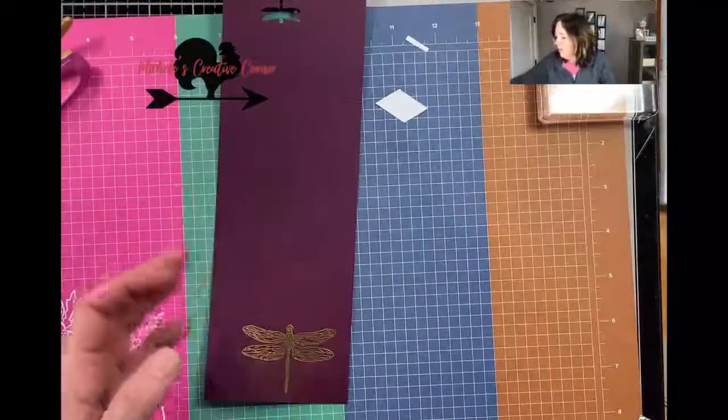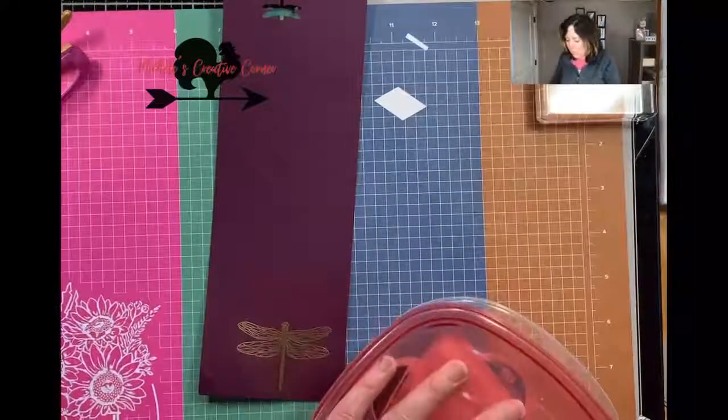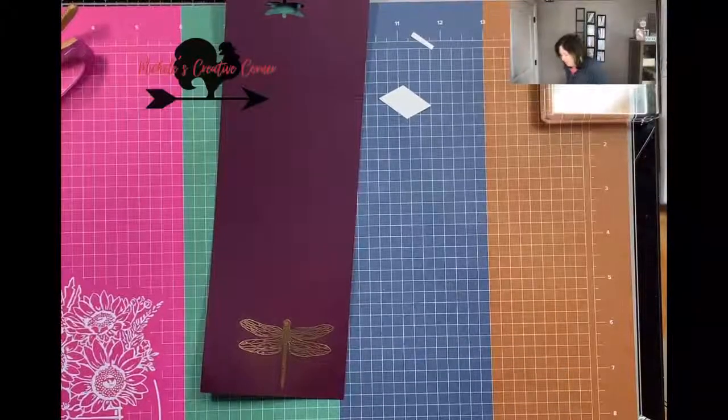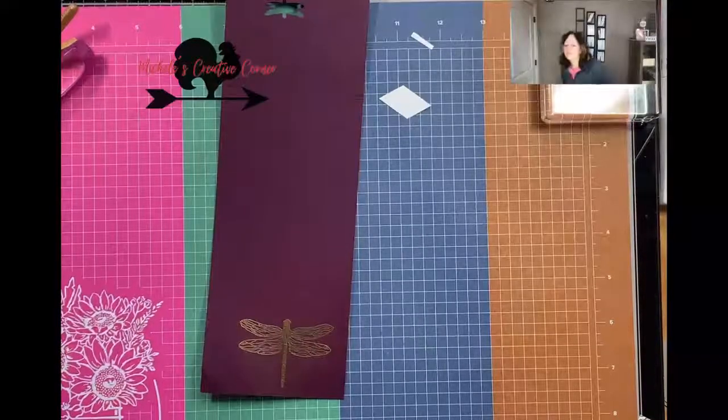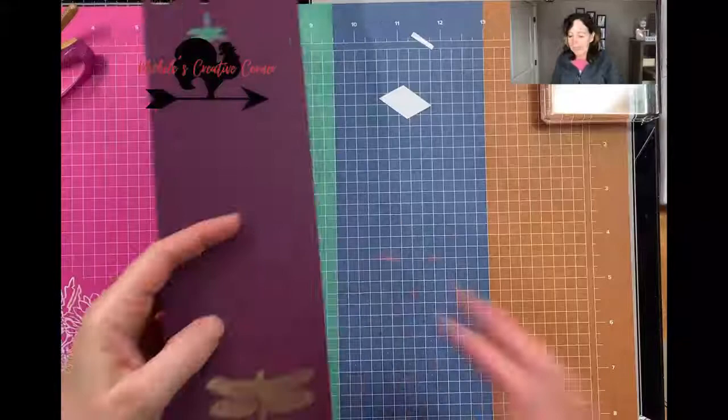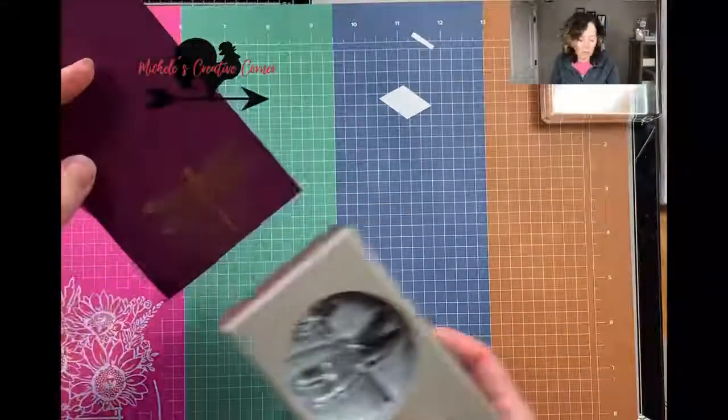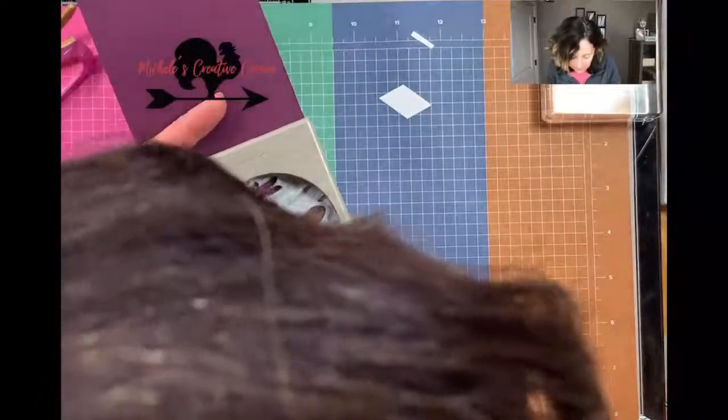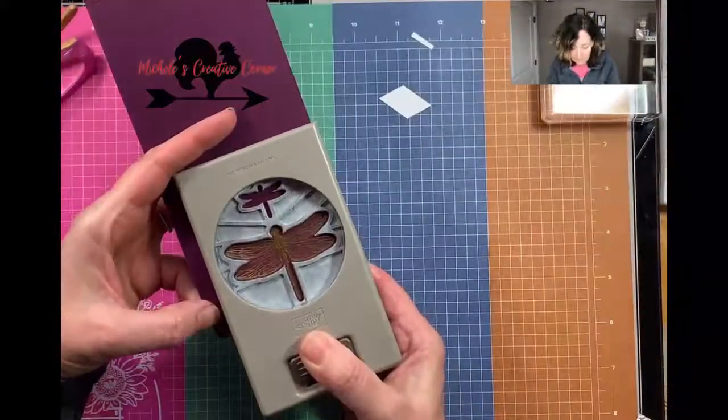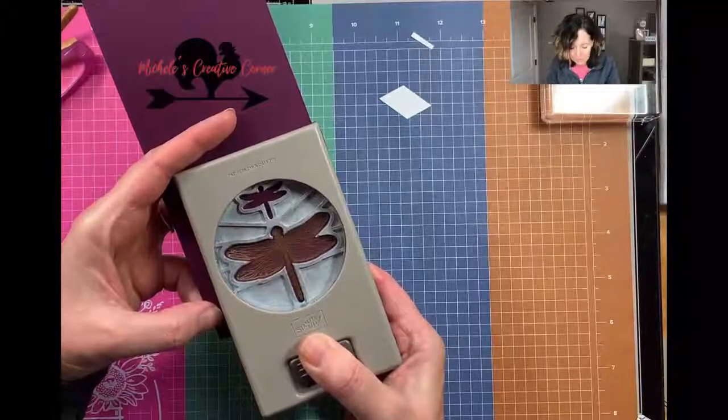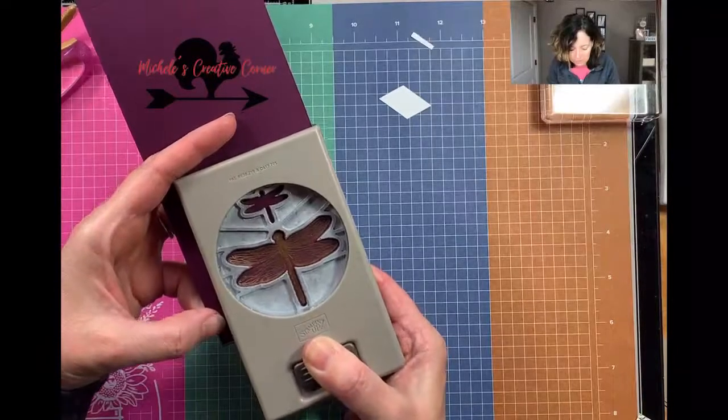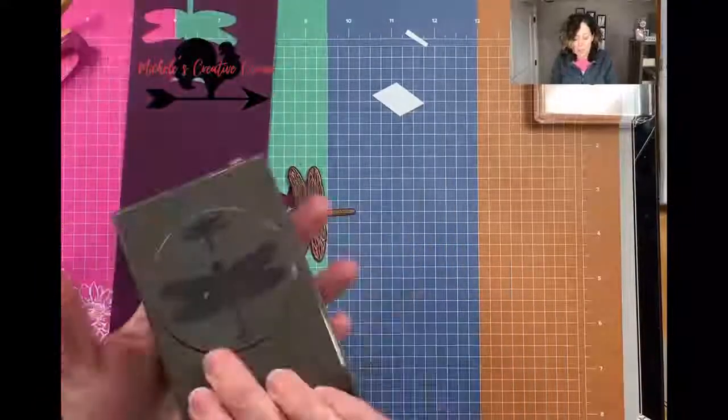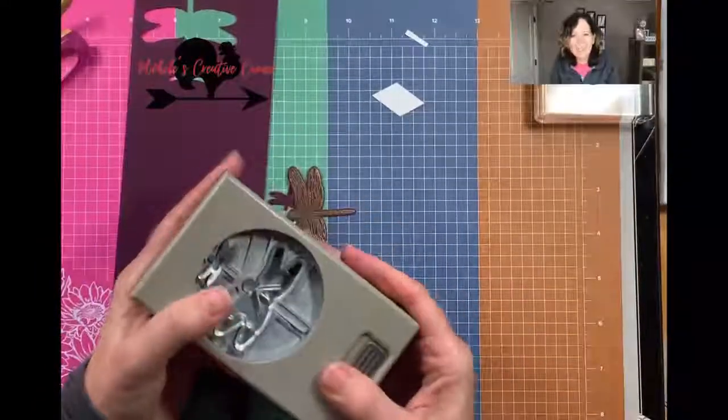We used to sell embossing buddies, which were something like baking soda in them, and that would help the powder only stick where you wanted it to stick, which was where you had your Versamark ink. But now we don't carry that embossing powder anymore. I might still use mine if I knew exactly where it is.